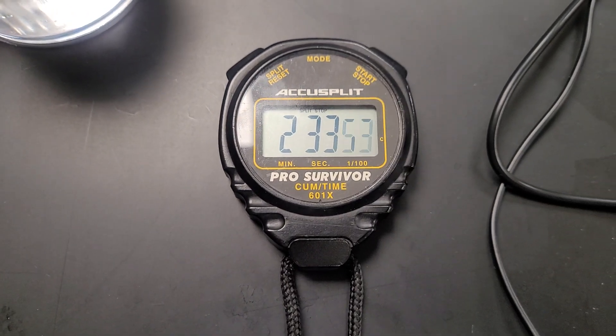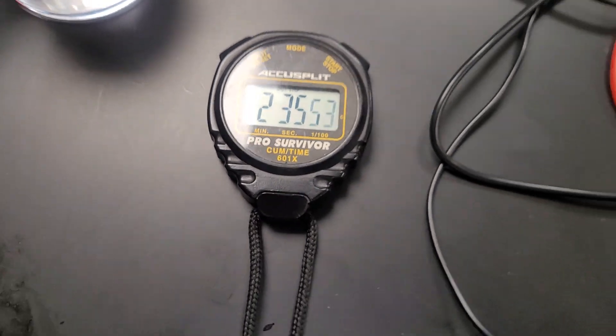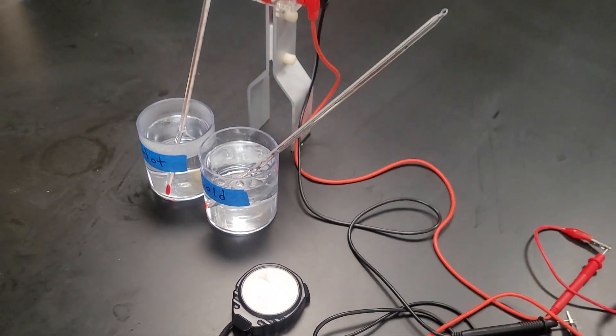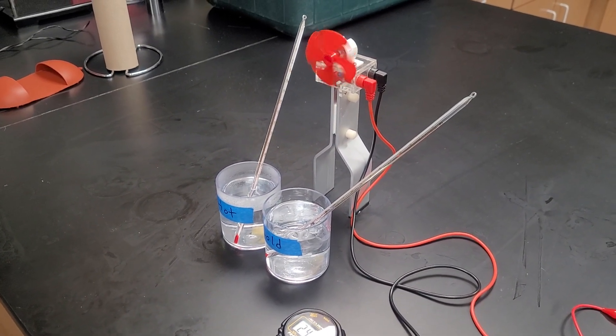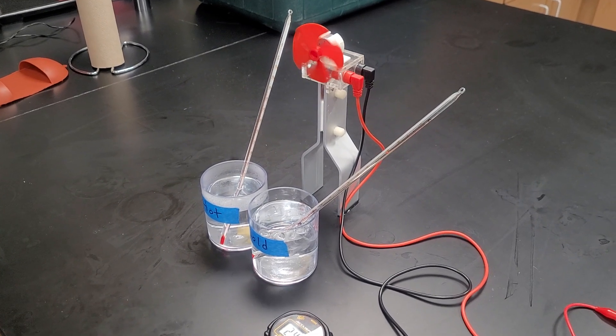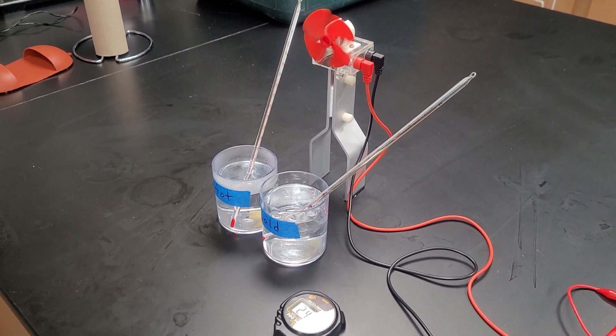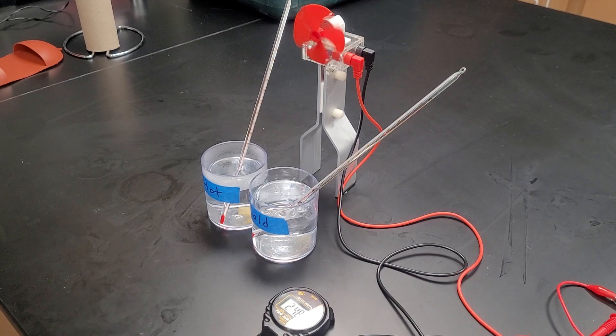Now what I'd like to think about is why do you think the fan is slowing down and generating less electricity as it's sitting on the table versus in the hot and cold water? What's happening to the temperature of the two legs of the thermoelectric generator at this time while it's sitting on our cool lab table surface?